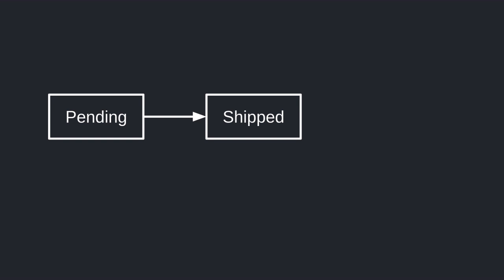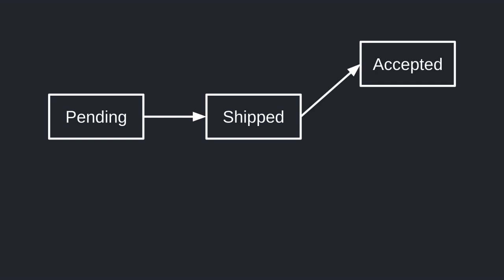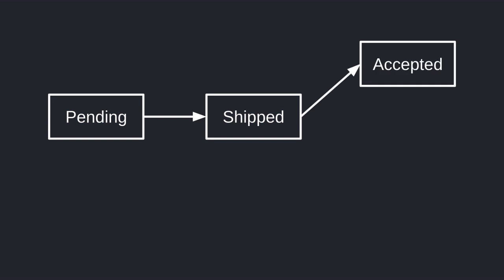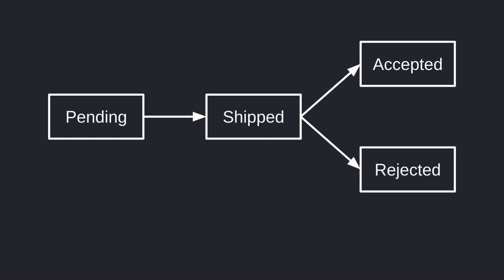Once I receive the payment, I'm going to ship the book, so the status of the order will be shipped. Once the shipment arrives at the customer, he can either accept it or reject it for reasons like damage during shipment or I sent the wrong books. The customer can also cancel an order while the status is still pending, and they shouldn't be able to cancel their order once the order is shipped.